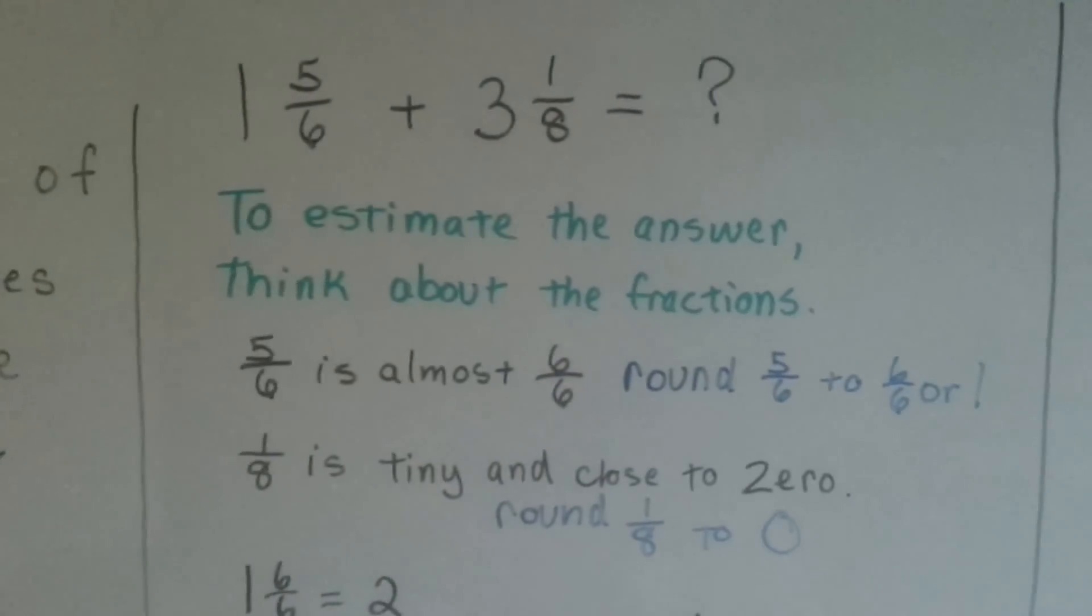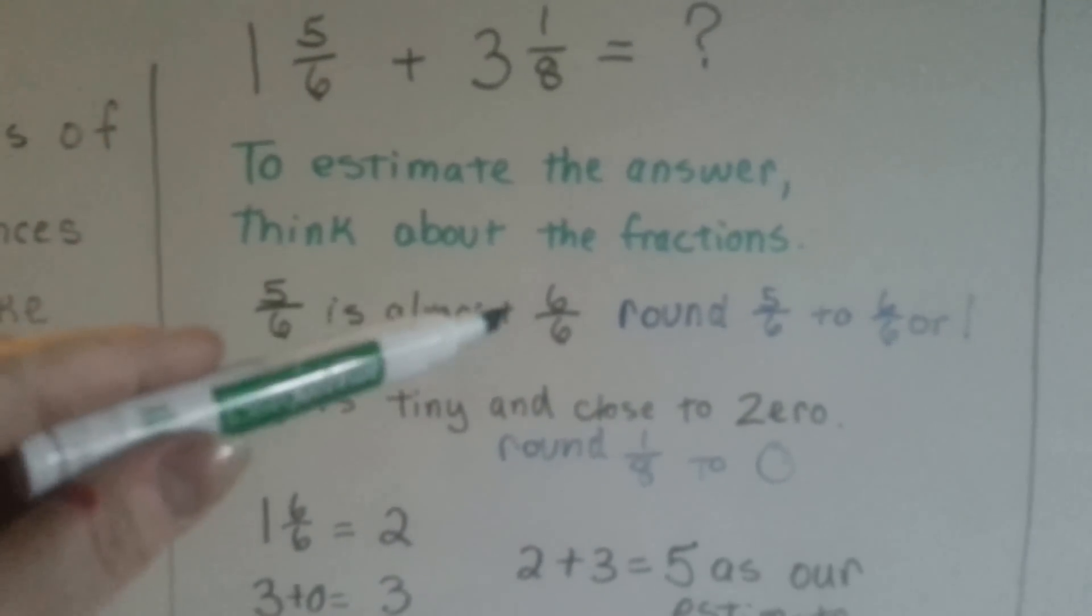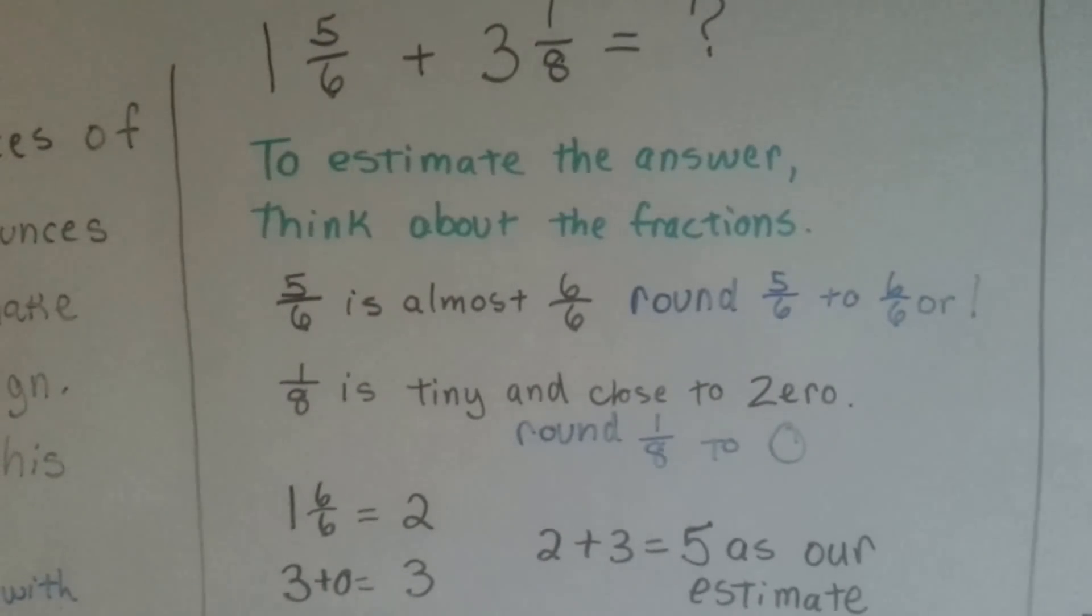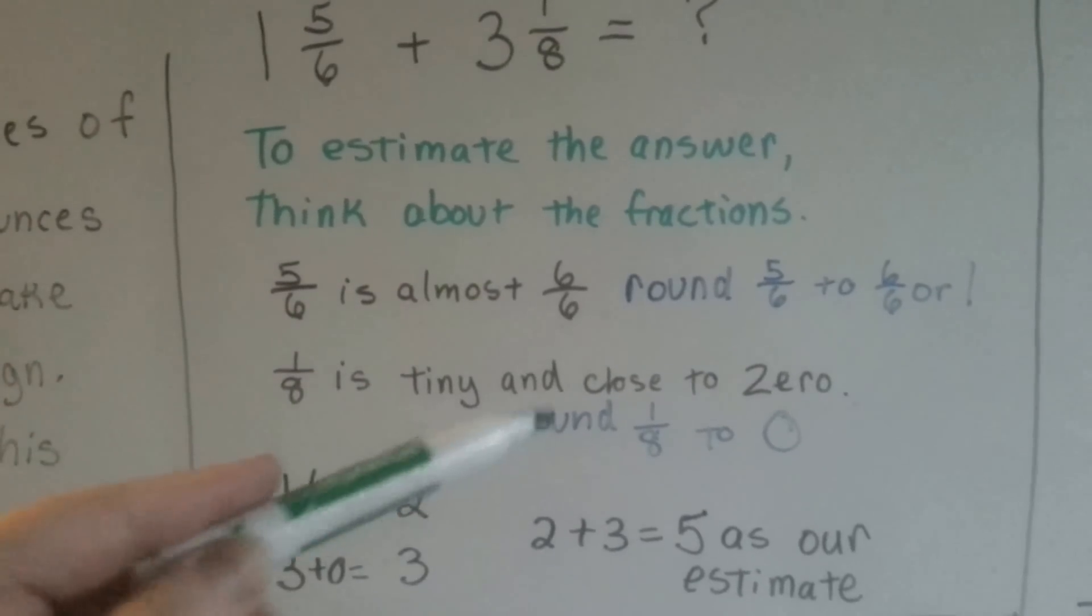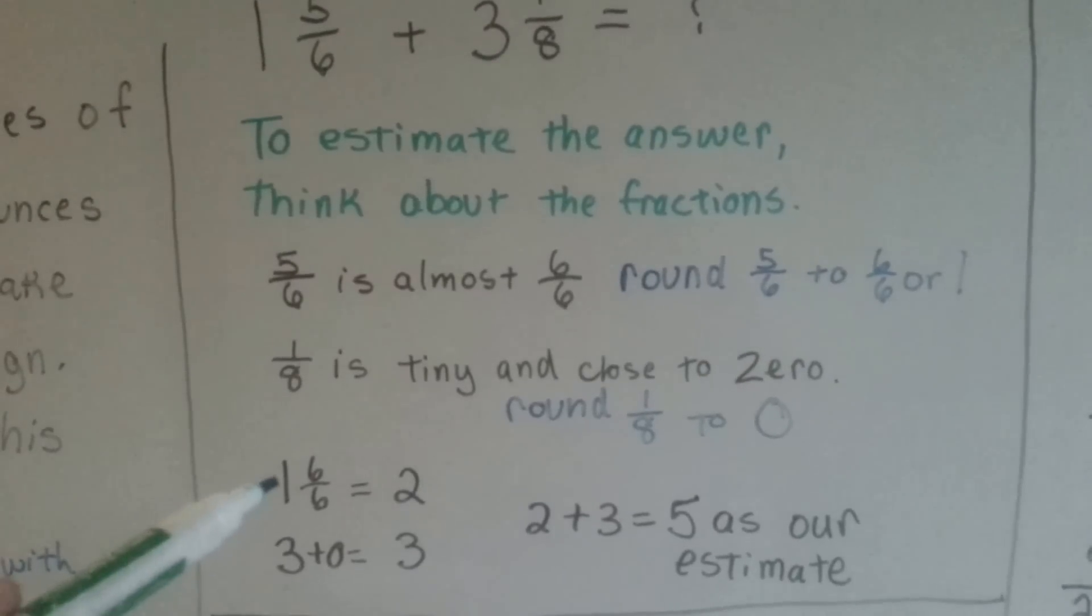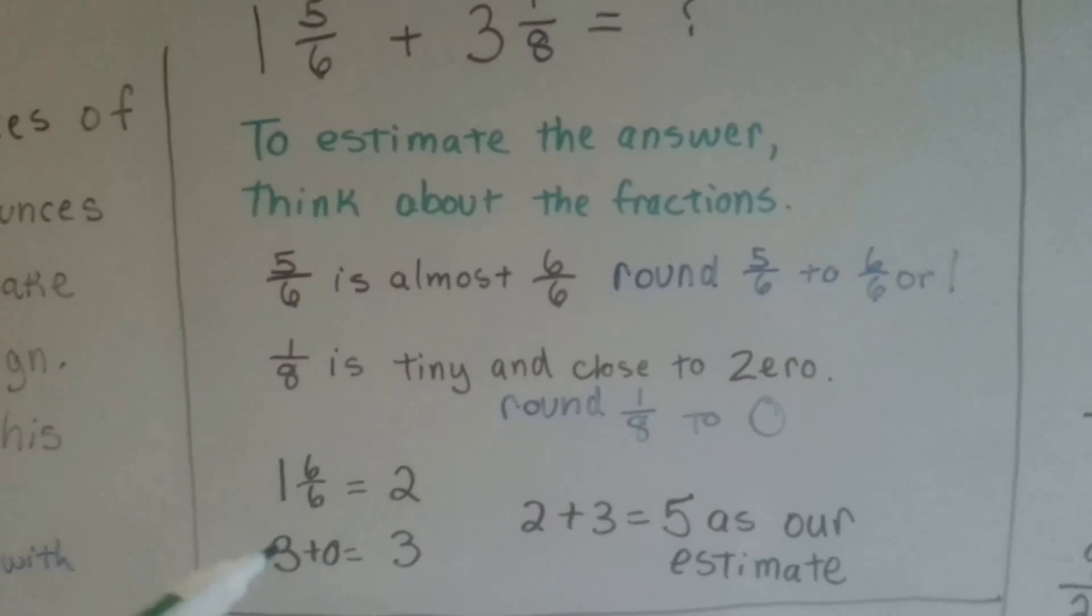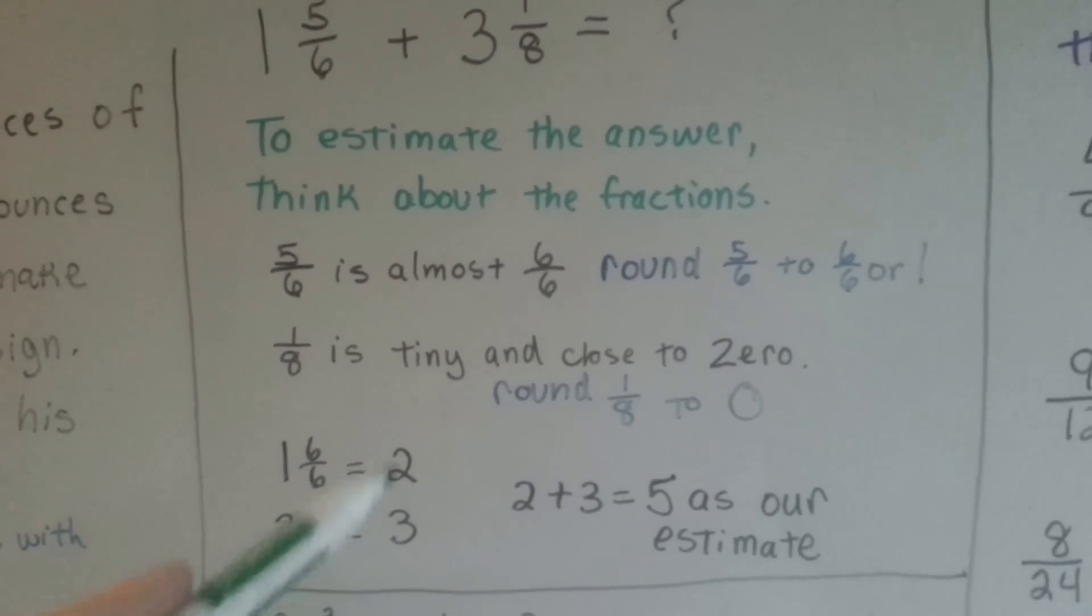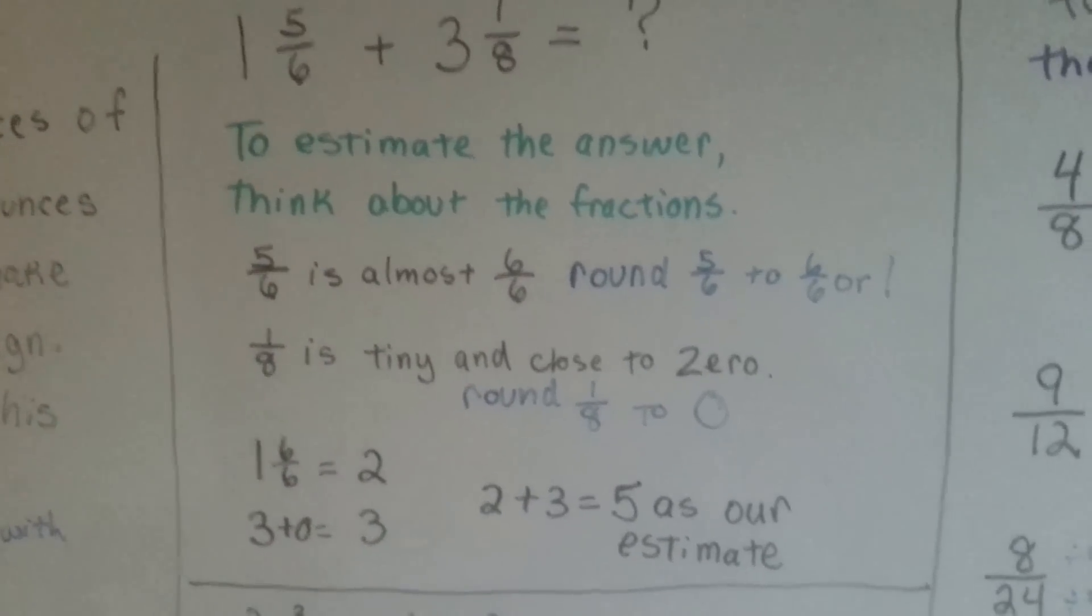If we need to estimate the answer, we think about the fractions. 5 6 is almost 6 6. We round the 5 6 to 6 6 or 1. 1 8th is tiny and close to 0. So we're going to round the 1 8th to 0. When we put the 1 with the 6 6, it makes 2. When we put the 3 with the 0 fraction, it stays 3. So now we can add 2 and 3 and get 5 as our estimate, as a whole number for these fractions.